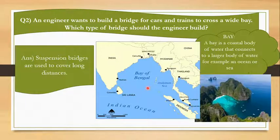We use suspension bridges to cover long distances because they are strong, they're easily built, and they are durable as well. So if you want to make a bridge across a wide bay for transportation of cars and trains, we have to make a suspension bridge. I hope you have understood the concept of bay and how we can use it in deciding what type of bridge we want.